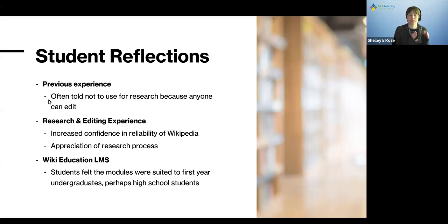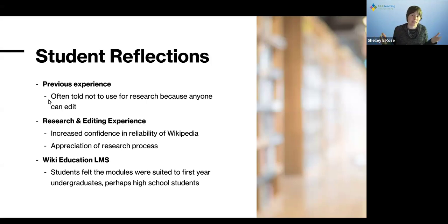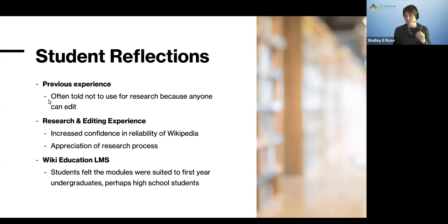In their individual final reflections, many noted they came to the project skeptical, but the experience really increased their confidence in the reliability of Wikipedia articles. They saw firsthand how articles were being edited and the standards editors were held to — and they struggled with those standards, because it was hard to find places to add meaningful edits and appropriate library sources. They gained a good appreciation of the research process and came to respect the work that had gone into the articles they were editing.